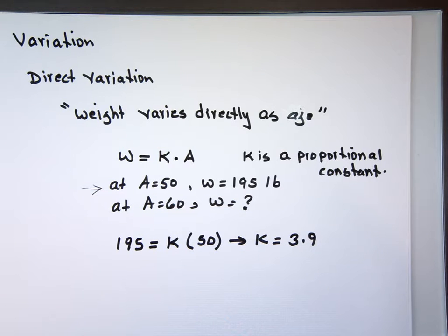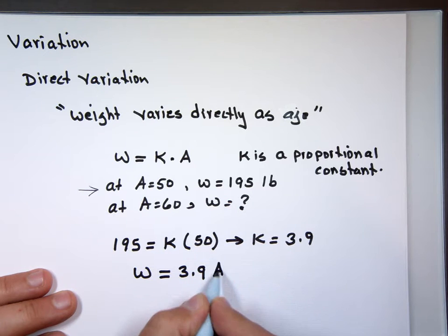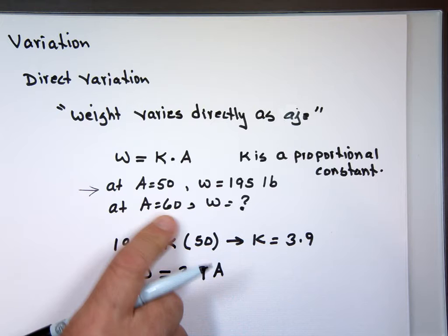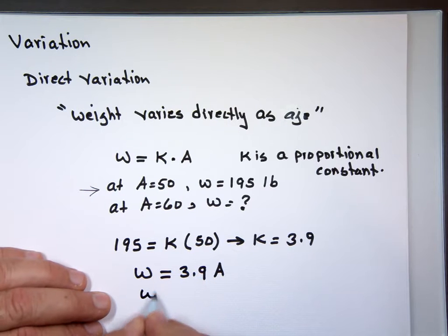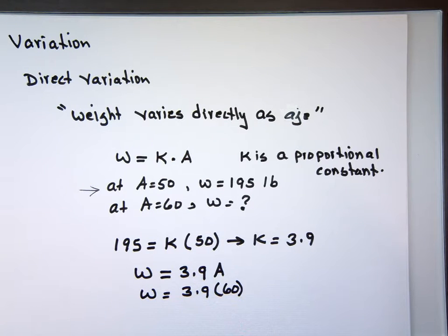What that means, what that number represents: I'm going to be gaining 3.9 pounds every year. So now the equation that describes my weight with my age is 3.9 times my age. So you give me an age and I'll tell you my weight is going to be. At age 60 now, how much am I going to weigh? 3.9 times 60, which will be what?